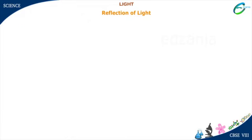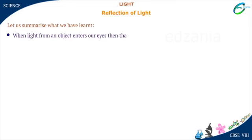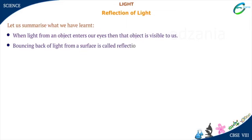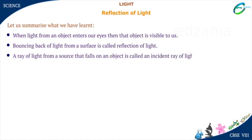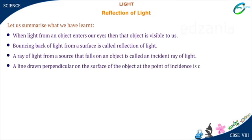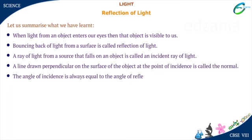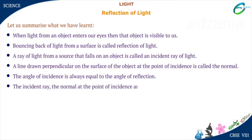Summary: let us summarize what we have learnt. When light from an object enters our eyes, then that object is visible to us. Bouncing back of light from a surface is called reflection of light. A ray of light from a source that falls on an object is called an incident ray of light. A line drawn perpendicular on the surface of the object at the point of incidence is called the normal. The angle of incidence is always equal to the angle of reflection. The incident ray, the normal at the point of incidence, and the reflected ray all lie in the same plane.